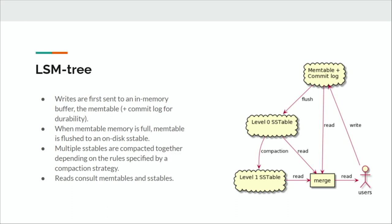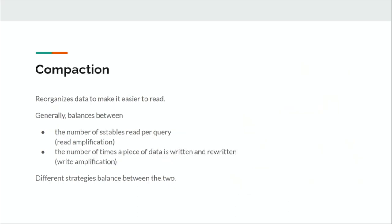If we didn't have compaction, every time the buffer fills up and we do a flush, we'd create a new SSTable. Over time, this accumulates lots and lots of SSTables, and every query becomes very slow because you have to consult all of them. So we need a process that takes this set of SSTables and reorganizes them to make reads faster. Compaction does this by taking data and rewriting it in a more organized way, balancing between the number of SSTables to consult for a read and the number of times data must be rewritten.